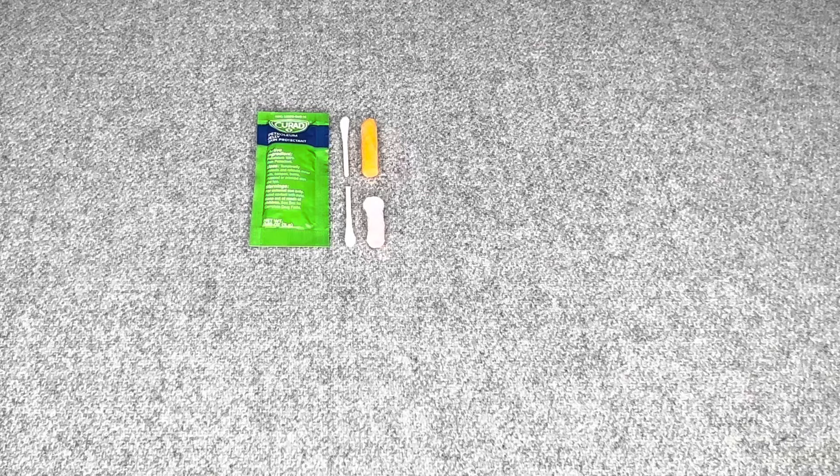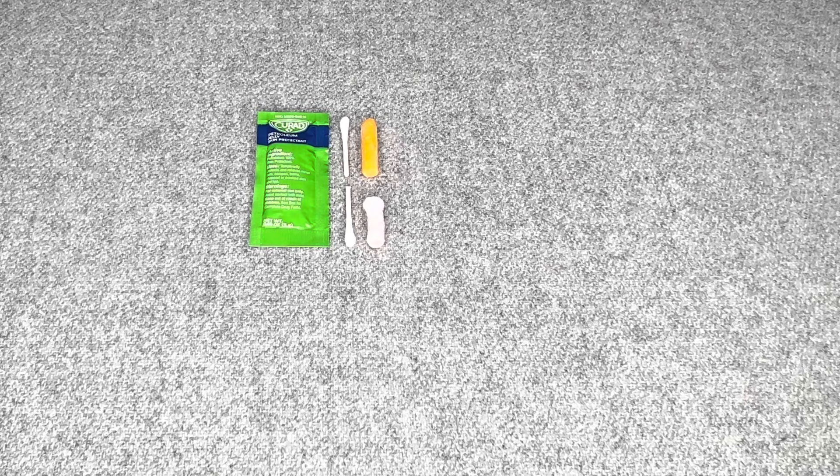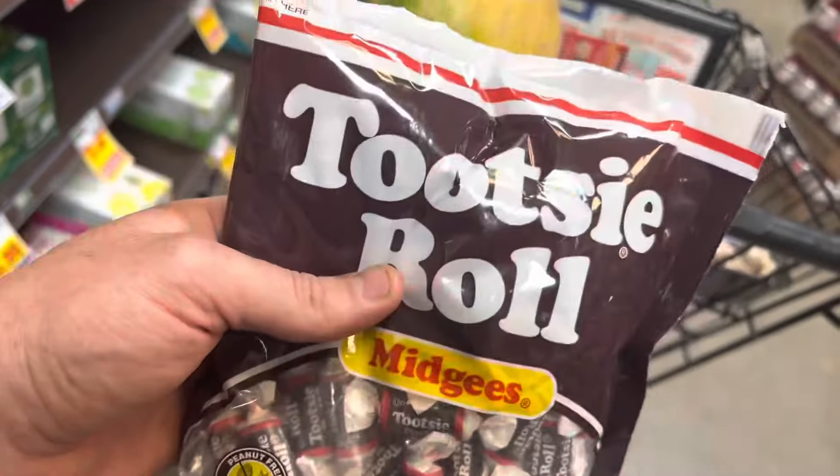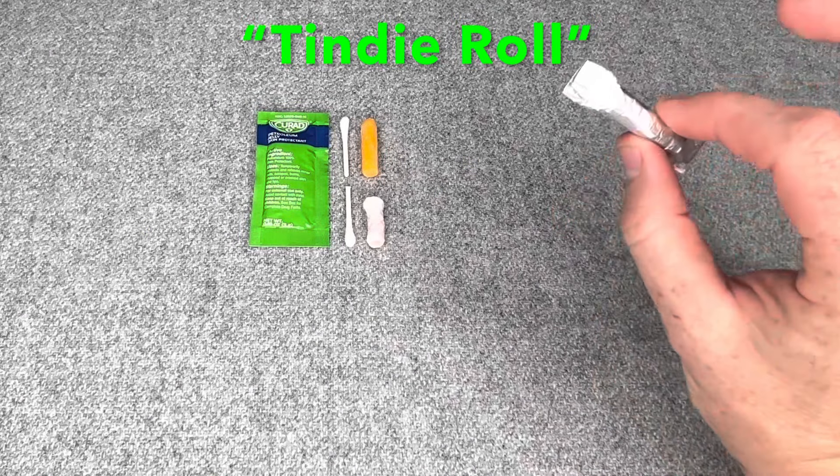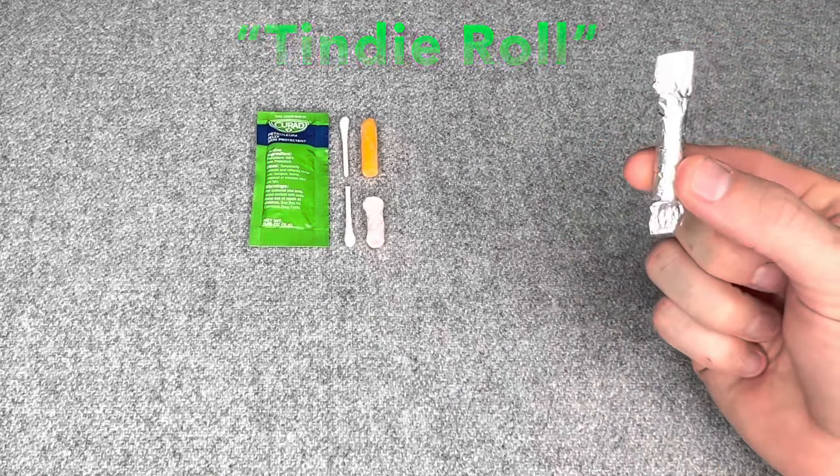And what I came up with is something I would like to name. We've all seen a Tootsie Roll. Well, this is what I call the Tendi Roll. All it is is basically a piece of tender wrapped in foil. That's it.